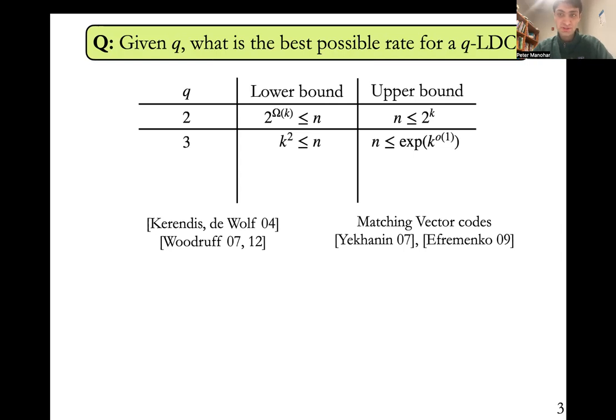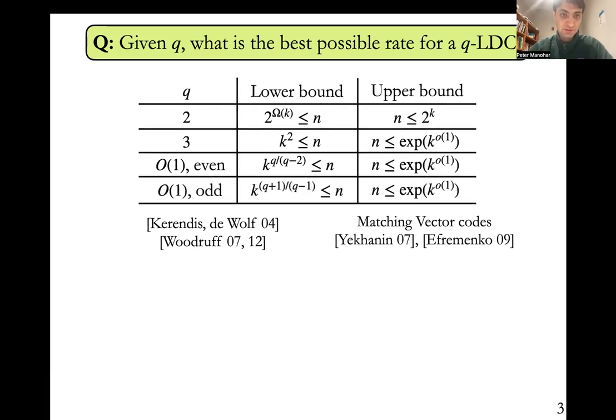We can furthermore ask what happens for any constant q. When q is a constant and even, we know that n has to be at least k^(q/(q-2)). And when q is odd, it's k^((q+1)/(q-1)), where here you observe that when q is odd, we're simply applying the lower bound to q even, observing that a q-query locally decodable code is simply a (q+1)-query locally decodable code, where q+1 is now even. Here I'm suppressing polylog factors in k, which I will do throughout the talk.